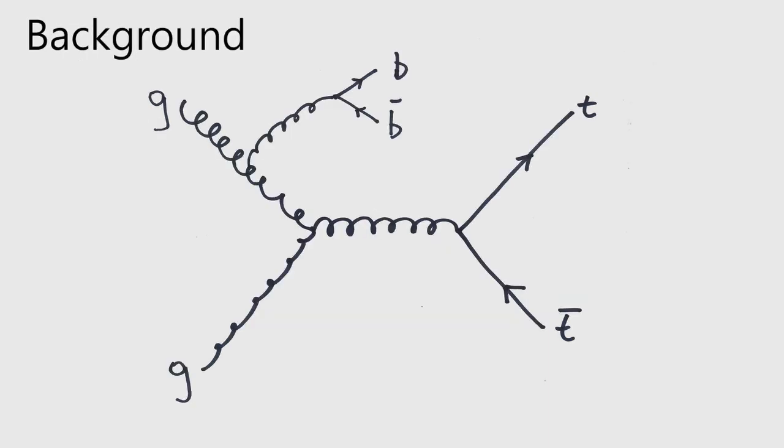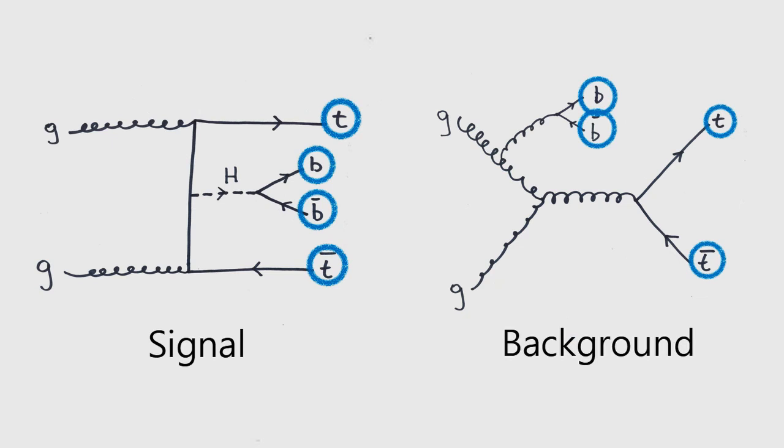Moreover, this is a process where the background very much resembles the signal, with the same particles in the final state. Furthermore, we don't understand our background with the accuracy needed, so we'll try a new approach, where we'll directly extract information about the background from the data, and then use it in order to better find our signal.